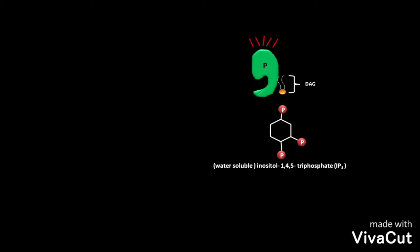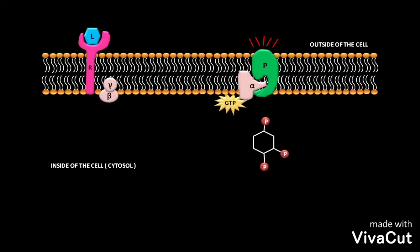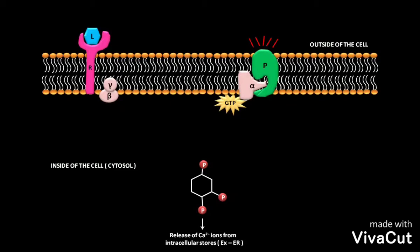Both DAG and IP3 act as second messengers in a variety of signal transduction pathways. After cleavage, the IP3 is released into the cytosol and there it triggers the release of calcium ions from intracellular stores like the endoplasmic reticulum. The DAG remains in the plasma membrane where it activates protein kinase C or PKC.